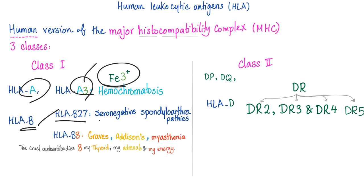HLA-B. We have HLA-B27, associated with the seronegative spondyloarthropathies, which we'll talk about later. And HLA-B8, Graves' disease, Addison's disease, and myasthenia. The cruel autoantibodies ate my thyroid, my adrenals, and my energy.